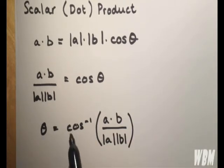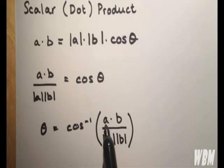And we have theta is equal to inverse cos, also known as arccos, of a dot b over the magnitudes of a and b.